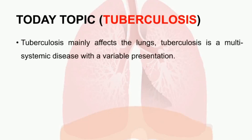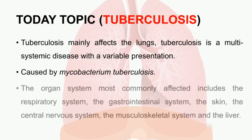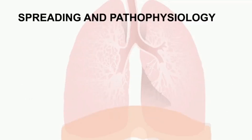Tuberculosis is mainly caused by mycobacterium. The bacteria affects various organs, including the skin and the liver. We will talk about the spreading and pathophysiology of TB.